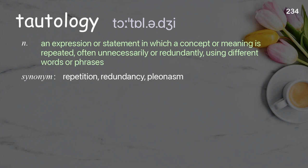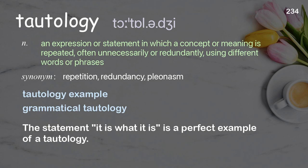Tautology: an expression or statement in which a concept or meaning is repeated, often unnecessarily or redundantly, using different words or phrases. Examples: tautology example; grammatical tautology. The statement 'it is what it is' is a perfect example of a tautology.